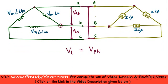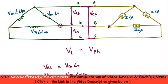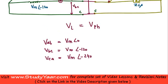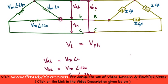So basically I can write that Vab is equal to Vm angle 0, Vbc is equal to Vm angle minus 120 — that is the voltage between point B and point C — and Vca is equal to Vm angle minus 240. I have my line and phase quantities in terms of voltage, and they are all equal.